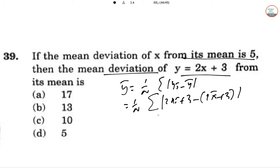Since Y equals 2X plus 3, y bar will also follow that. So this becomes 2 by n summation of xi minus x bar, which equals 2 times the mean deviation from mean, so 2 times 5. This value will be 10, so option c is correct.